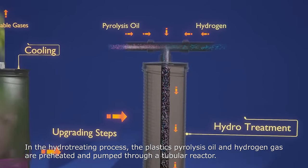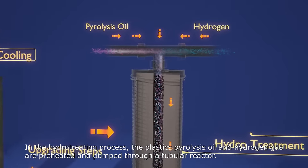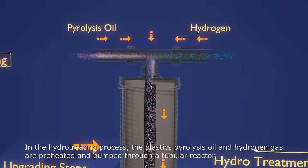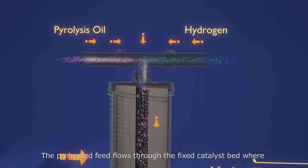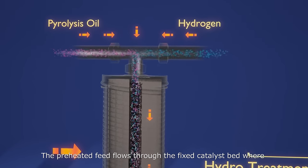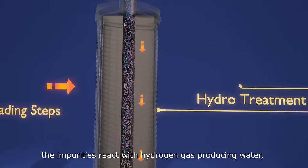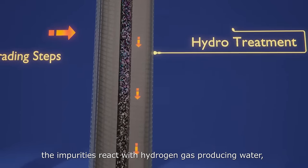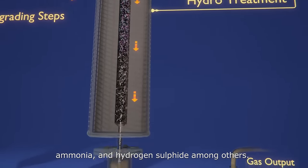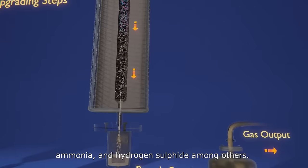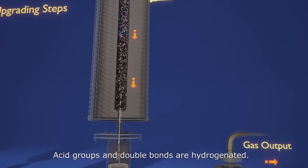The preheated feed flows through the fixed catalyst bed where the impurities react with hydrogen gas producing water, ammonia, and hydrogen sulfide among others. Acid groups and double bonds are hydrogenated.